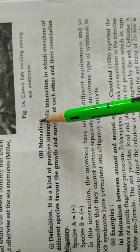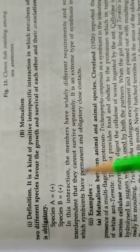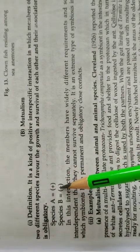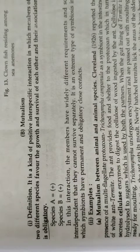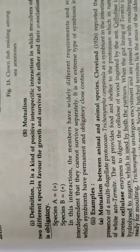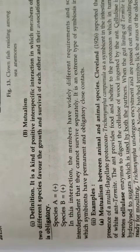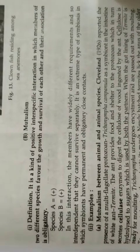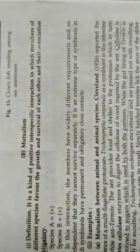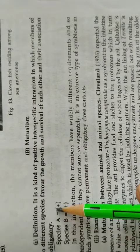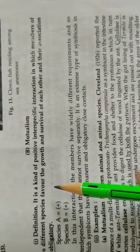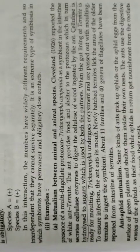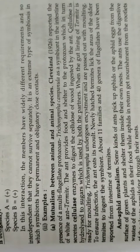Next is mutualism. Mutualism is an association in which both species are benefited and both are important for their growth and survival. Both symbionts cannot survive without each other. So this is an obligatory or compulsory association — both symbionts always have to remain together.